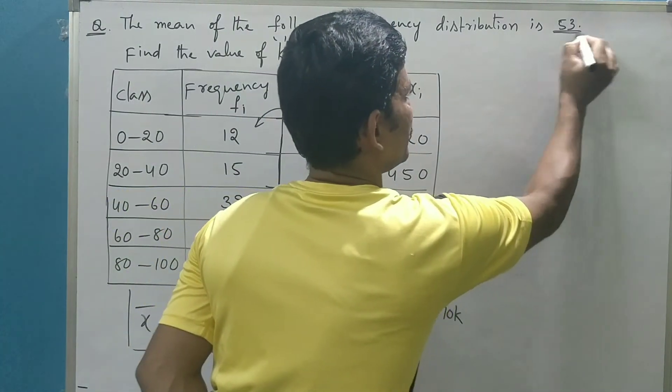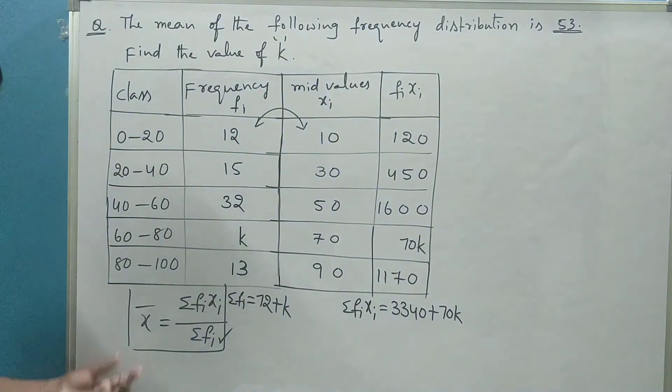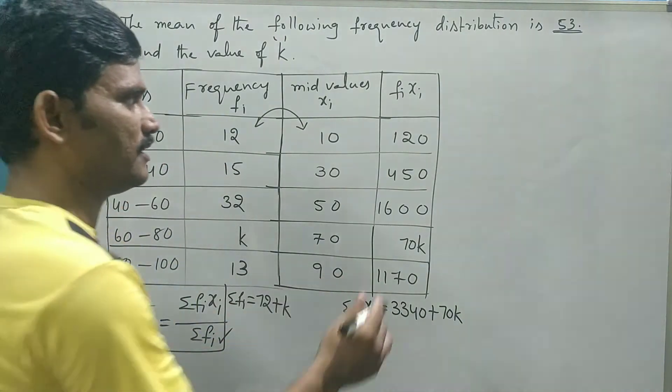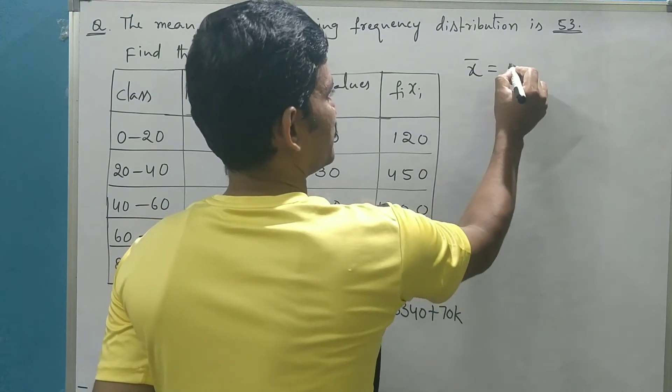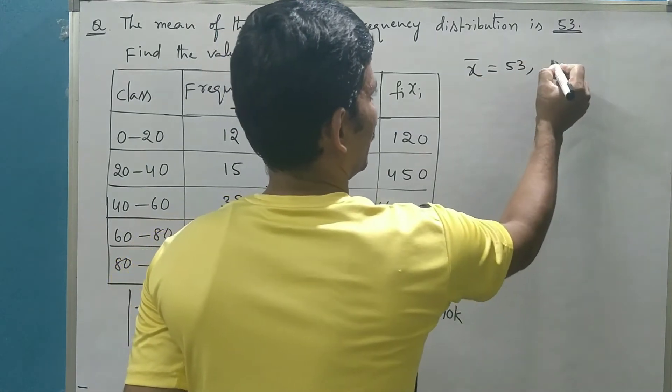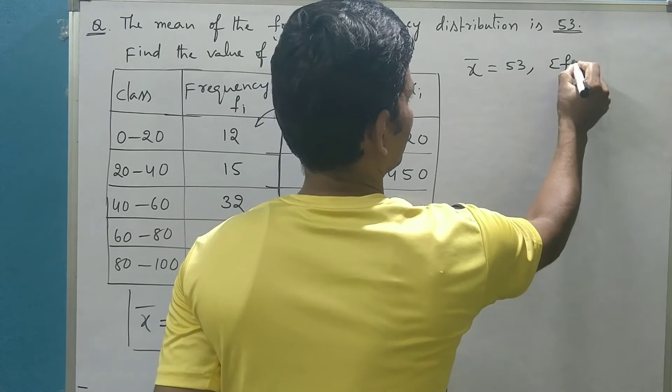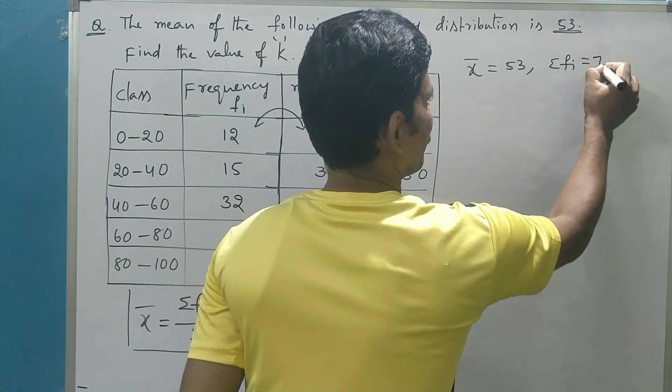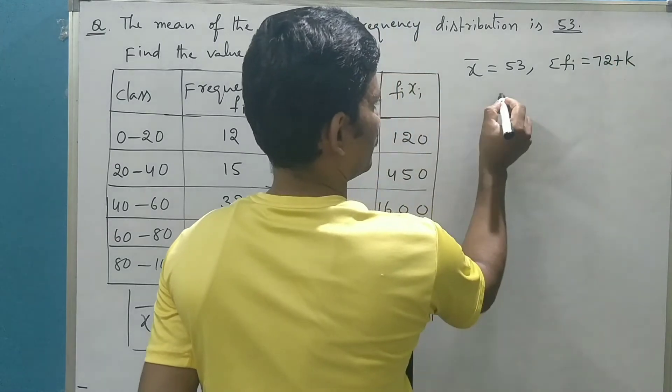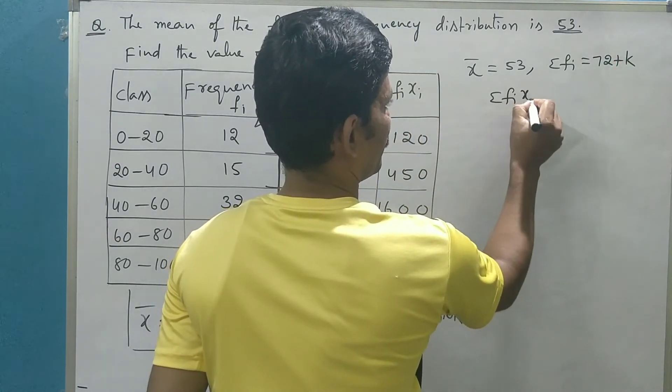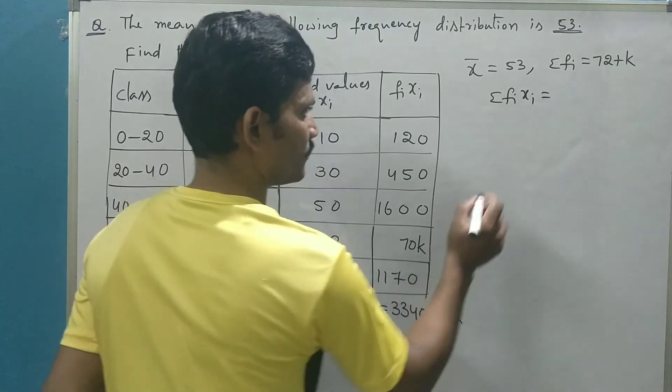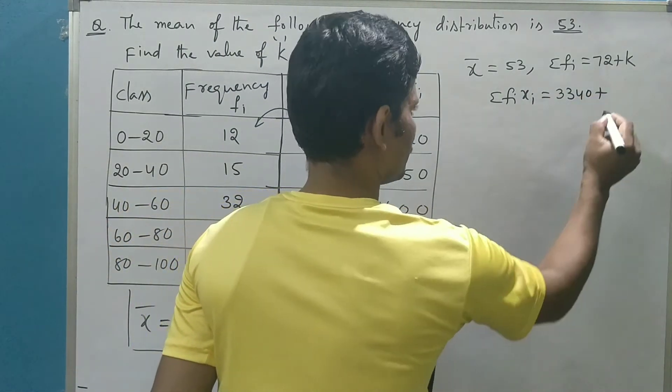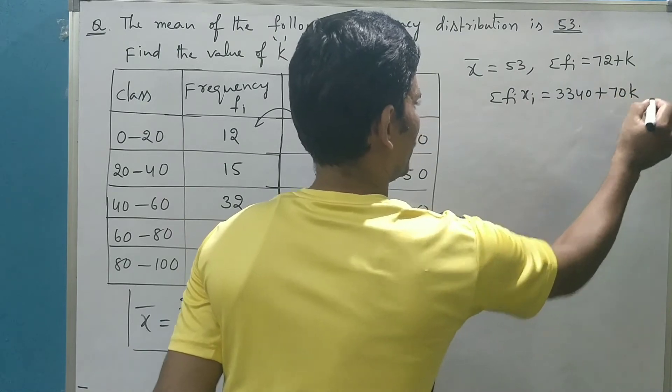And one more thing is x̄. X̄ means mean. Mean is already given as 53. So let us write all these three values and substitute. X̄, mean of the distribution is 53. And Σfi, sum of the frequencies is 72 plus k. And Σfixi is equal to 3340 plus 70k.